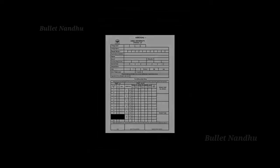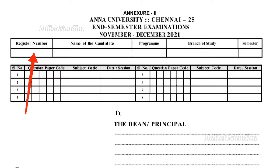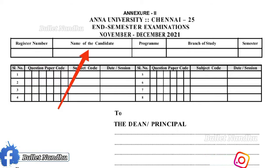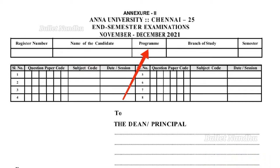OK friends, we have an Annexure 1 and Annexure 2. We have Annexure 2 in the post cover. Inside the post, we have a registration number and an exam number. We have the name of the candidate, and we have the program — BTECH or BE. We have the branch of study, such as Information Technology or IT.